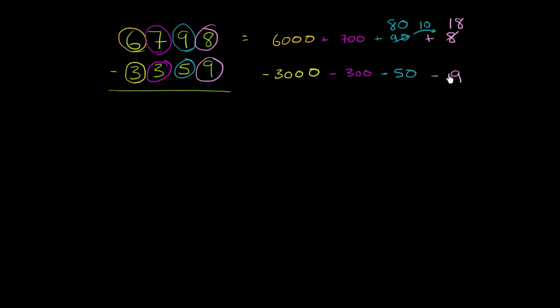But now it becomes a little bit easier for us to actually subtract. Now if we subtract, I have 18 minus 9, which is 9. I have 80, not 90 now. I have 80 minus 50, which is 30.